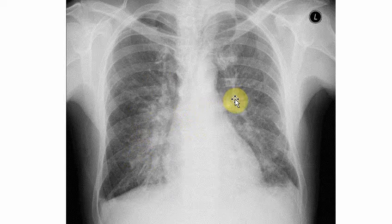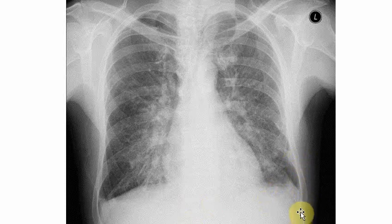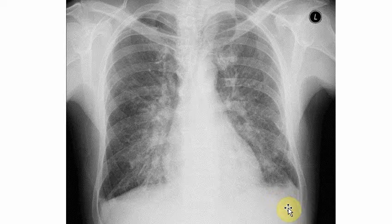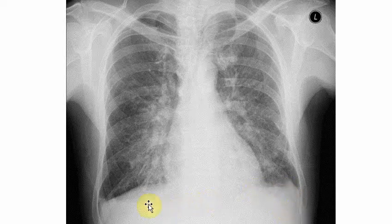Besides these patchy opacities, if you look at the costophrenic angle — which is where the ribs and the diaphragm meet — it should be sharp and dark. But here we see an opacity that even has a level, and the same is almost true on the other side. These are pleural effusions in the costophrenic angles, showing fluid build-up in the pleura.